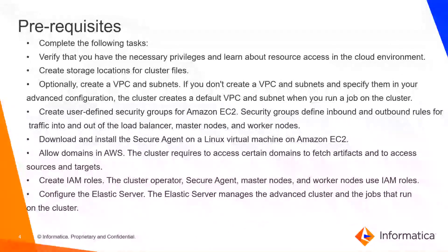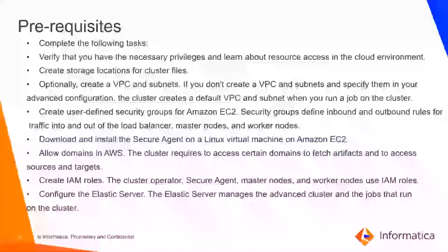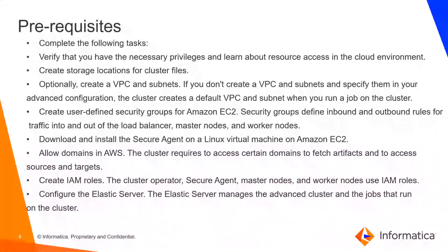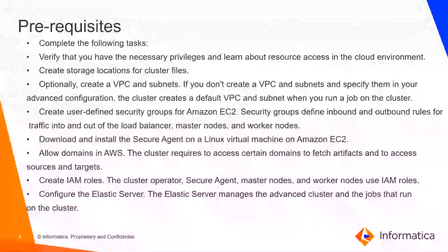Later, we can specify the initialization scripts path in the advanced cluster configuration. Next, create a VPC and subnets if you want to use your own VPC. If you don't specify your VPC in the advanced cluster configuration, then the default VPC will be used. Fourth, if you want to use your own security groups, then you can create them. Next, you can download the secure agent. Once you have performed all these prerequisites — creating VPC, setting up storage and logging locations — then you can create and install the secure agent on Amazon EC2 machines.